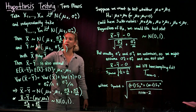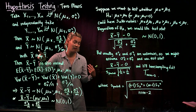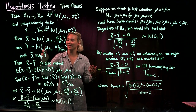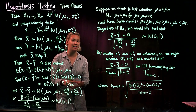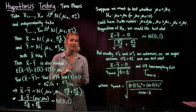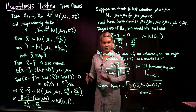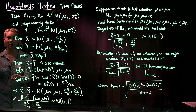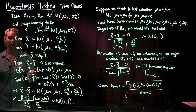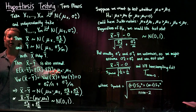Since x̄ is normal and ȳ is normal, a normal plus a normal gives us a normal. So x̄ minus ȳ is normally distributed. We just need to find the mean and variance. The mean of x̄ minus ȳ: using linearity of expectation, E(x̄) minus E(ȳ) gives us mu x minus mu y.